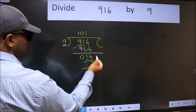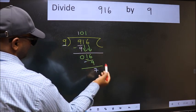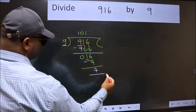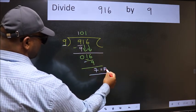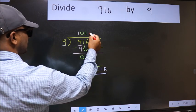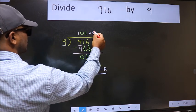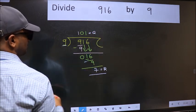No more numbers to bring down, so we stop here. This is our remainder and this is our quotient.